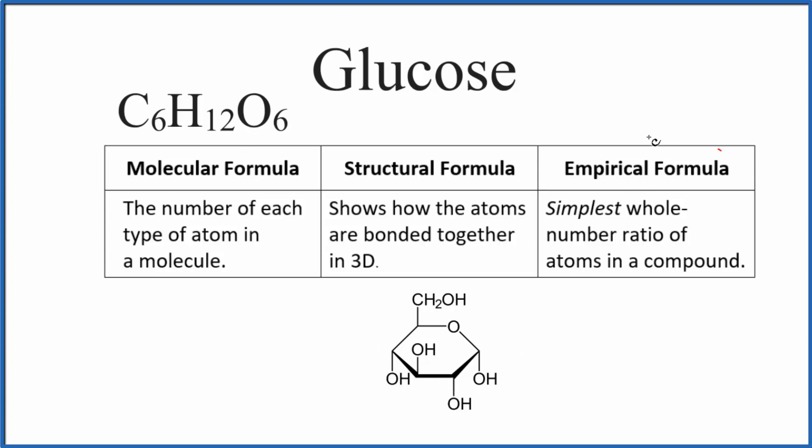We can also write the empirical formula for glucose, and this is the simplest whole number ratio for the atoms. If we look at the molecular formula, we have 6, 12, 6. We could reduce that ratio to 1, 2, 1.